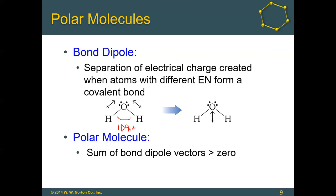The bond angle is actually a little smaller than 109.5 degrees because of the lone pairs. Both bond dipoles point from the hydrogens toward the oxygen. The side with the hydrogens becomes slightly positive and the side with the oxygen becomes slightly negative — this results in a polar molecule where the sum of the bond dipole vectors is greater than zero. If you have polar bonds and those vectors don't cancel, you have a polar molecule.